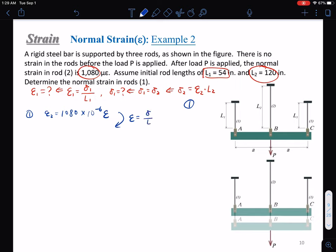From our equation that epsilon equals delta over L, we can calculate delta two. Delta two equals epsilon two times L two, which is 1080 times 10 to negative six times 120 inches, giving us 0.1296 inches.